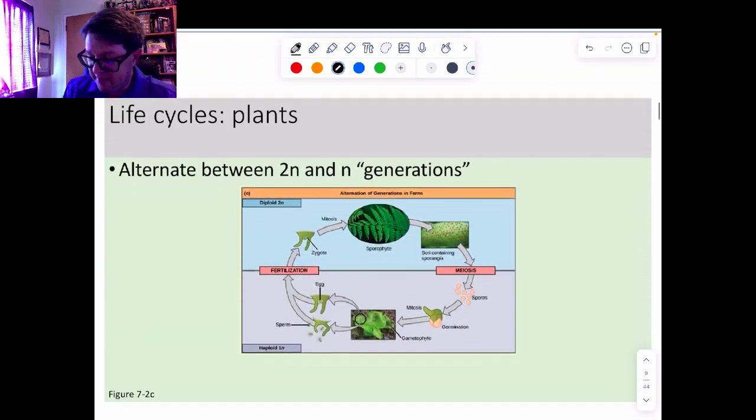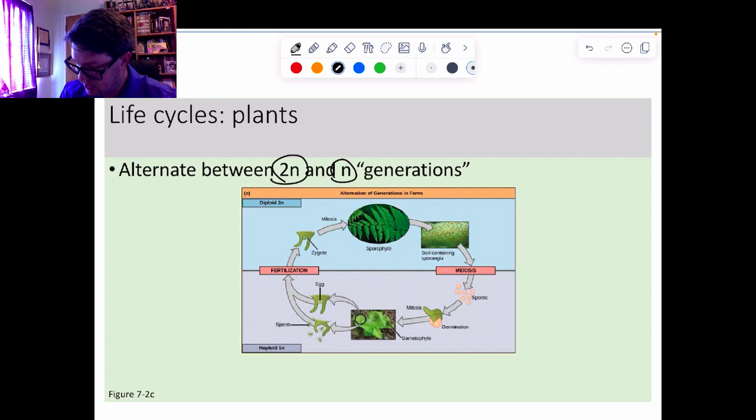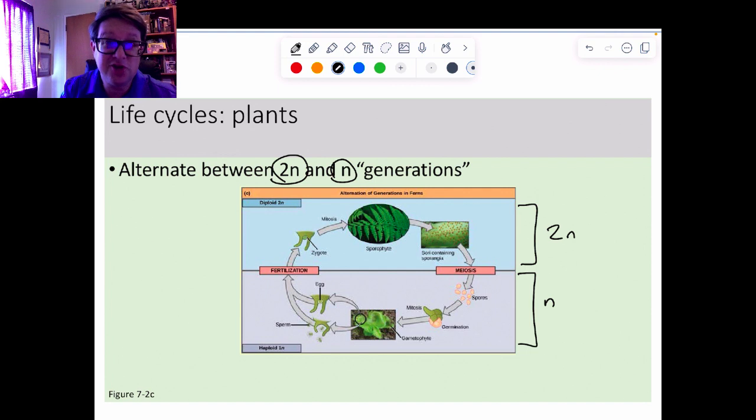Plants alternate between being diploid and haploid, and we call that the alternation of generations. Plants make full-blown structures that turn out to be haploid and full-blown structures that turn out to be diploid. Depending on the type of plant you're looking at will determine how much is haploid and how much is diploid. If you're looking at a flowering plant, most of what you're looking at is diploid. You have to look at the flower and the pollen to find the haploids. But if you're looking at something like moss, that is going to be mostly haploid and some of it will turn out to be diploid.